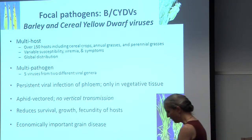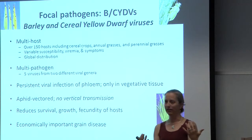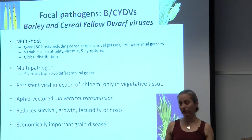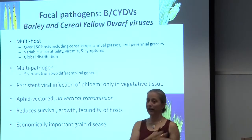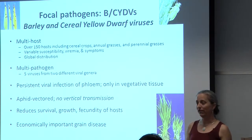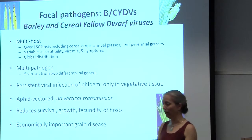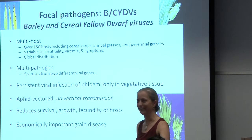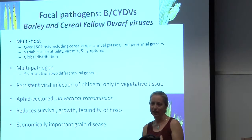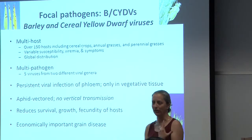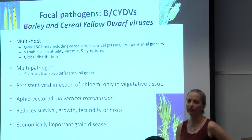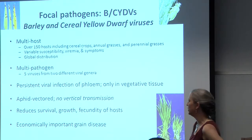They are a multi-host pathogen — like Lyme disease and many other pathogens of humans, they can infect many different host species. As far as we know, they can infect pretty much any cereal or grain: crops, corn, wheat, barley, rye. They can also infect native grasses, non-native grasses, annuals, perennials. But they have variable susceptibility, viremia, and symptoms within any given host species.